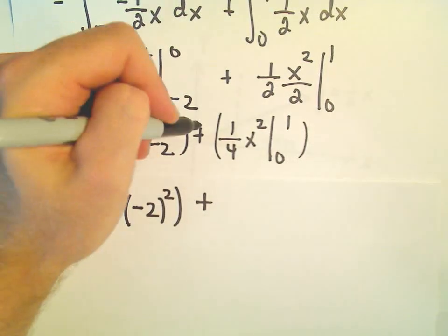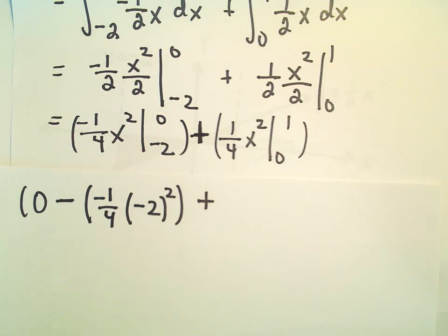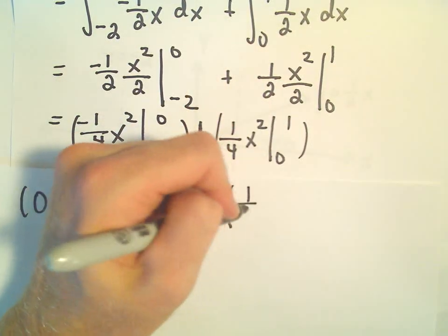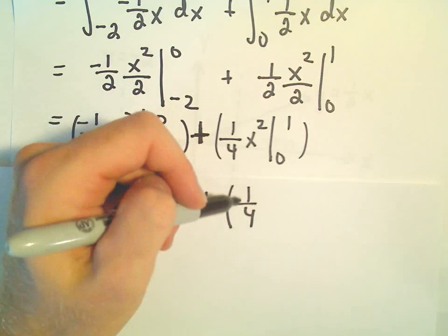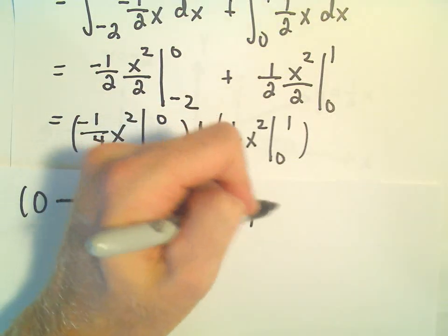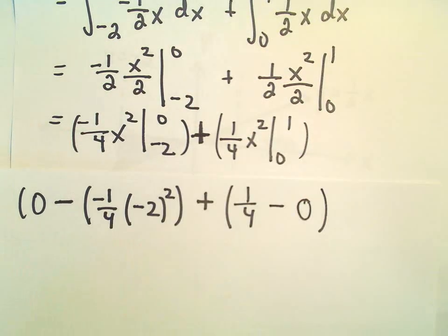And then plus. Now we'll just plug in 1. Well, 1 squared is 1, so our upper limit will be 1 fourth. Minus, we'll plug in 0, which will be just 0.